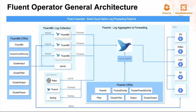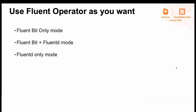FluentD is more powerful for performing advanced data processing because of its rich plugins. We added FluentD support in Fluent Operator and renamed it. Now you can receive logs through networks like HTTP or Syslog, then process them and send those logs to final destinations such as Elasticsearch, Kafka, and S3. Fluent Operator provides three kinds of modes: FluentBit only, FluentBit plus FluentD, and FluentD only.